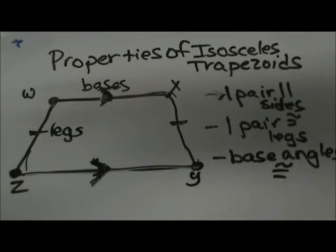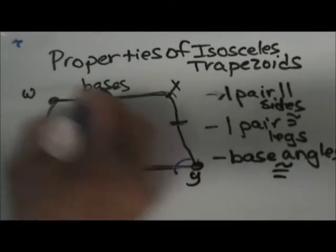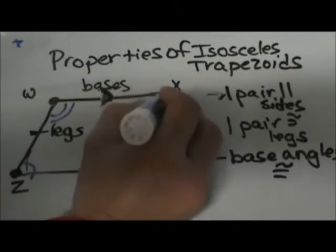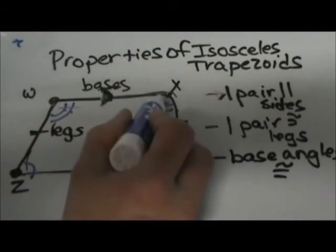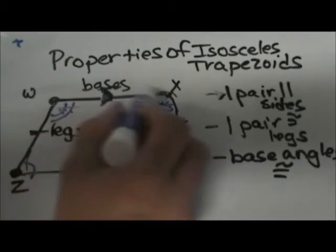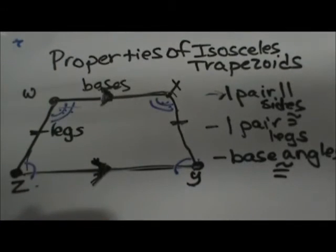Another property of an isosceles trapezoid is about the angles. Let's look at our base angles. We have two pairs of base angles: the ones down here at the bottom and the ones at the top. These two angles that run along the same base, those at W and X have the same measure, and Z and Y have the same measure. So let's add some angle measures.